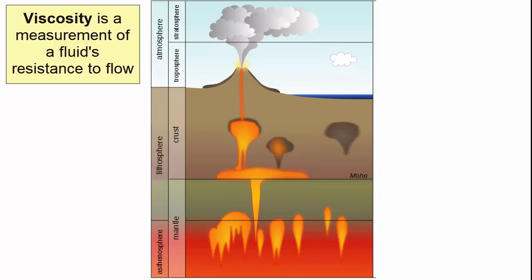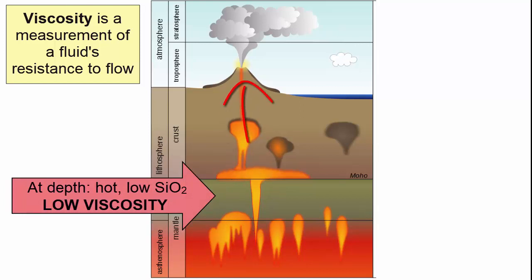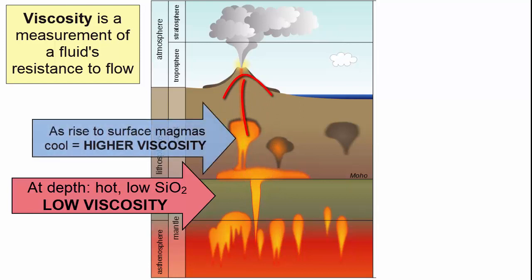How does viscosity relate to magmas? Magmas formed at depth are hot and low in SiO2, which makes them low in viscosity. As they rise upward through the crust, they cool, which makes them more viscous.